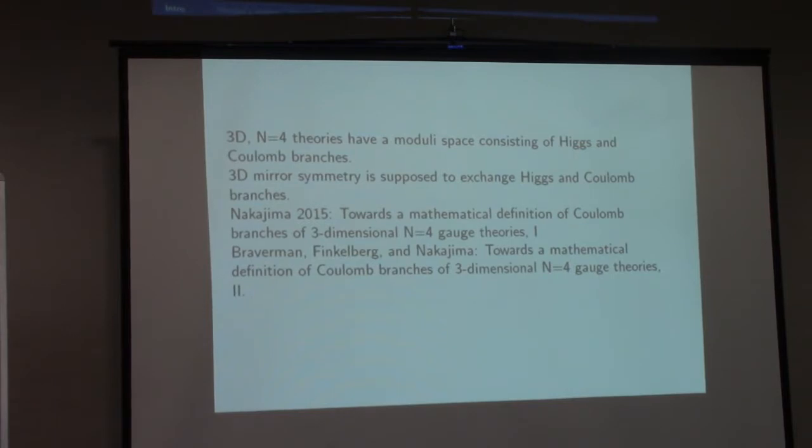A possible reason this is in this conference is because of something called 3D mirror symmetry. Three-dimensional N equals four theories have moduli spaces consistent with two branches: Higgs branch and Coulomb branch. In 3D mirror symmetry, we're supposed to exchange them roughly. But the truth is I don't have anything to say about it, so let me just leave that as a black box and move on.